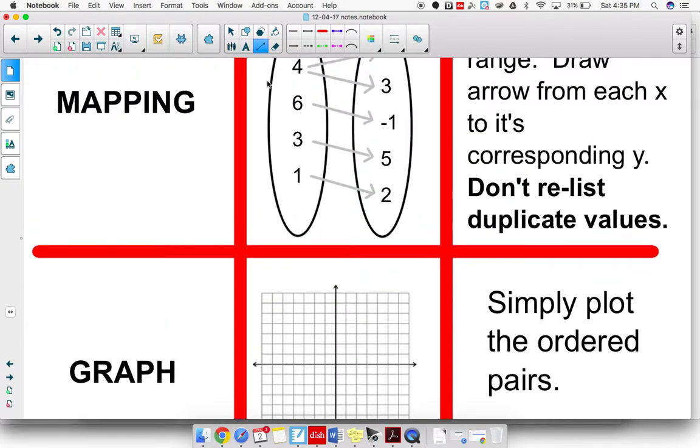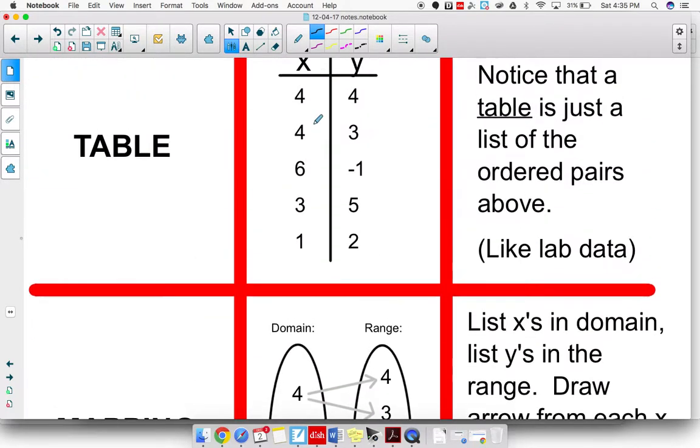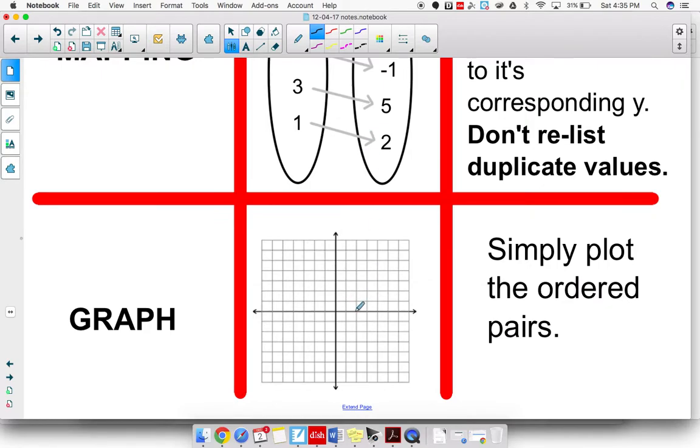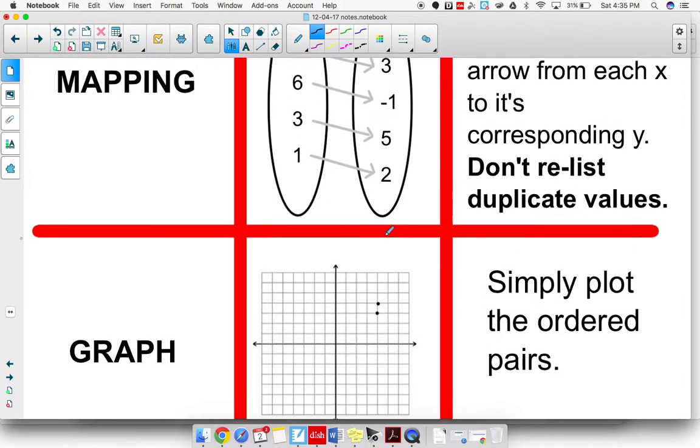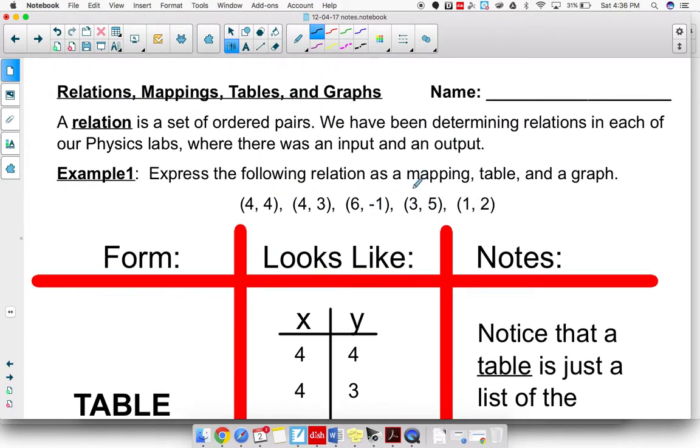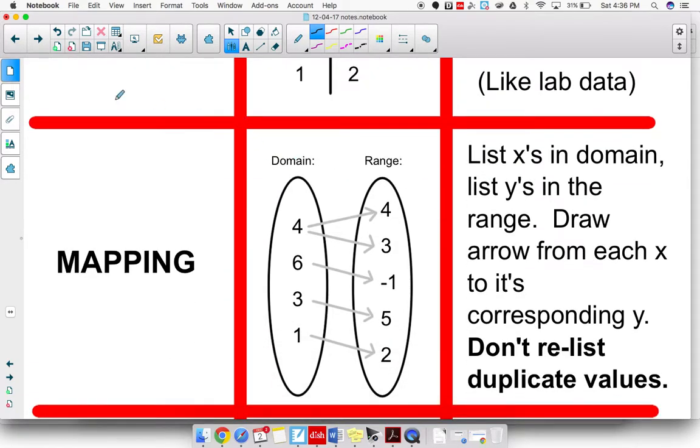The graph is something we've been doing all year. So we're just basically graphing your ordered pairs. So I'll go back to the first one, 4, 4. I'll just plot that on my graph. One, two, three, four, one, two, three, four. And then I believe the next one was 4, 3, which would go right here. And then we have 6, negative 1. It'd be right there. We have 3, 5, which would be right here. And then 1, 2. And that's it. That's just really different ways to represent all of these ordered pairs we see here. This is just three different ways to represent that.